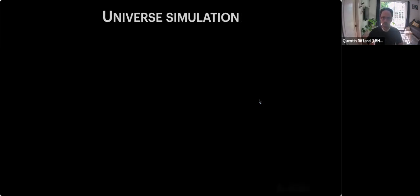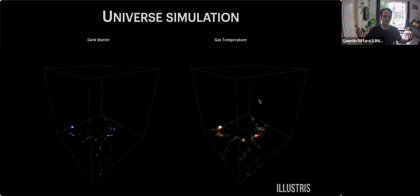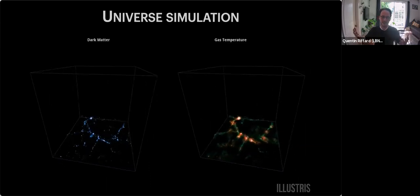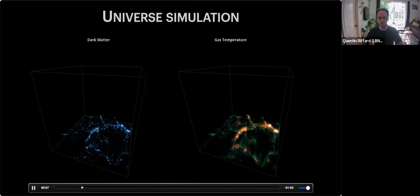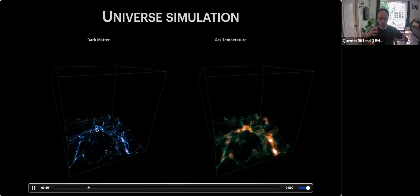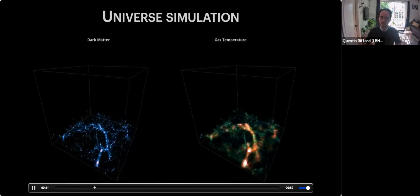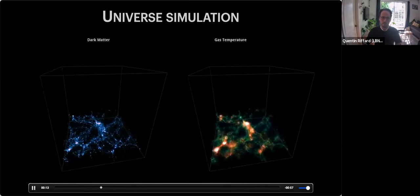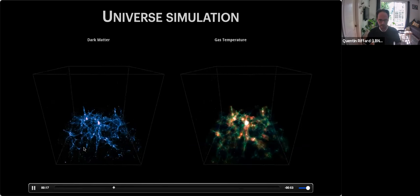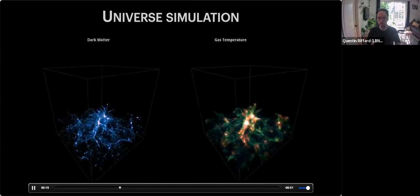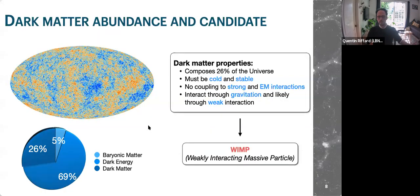That shows us that at many scales we have dark matter — even at universe scales. At the universe scale, dark matter more or less follows the matter density, but also forms filaments between different clusters. Based on that, we have many other observations supporting dark matter.